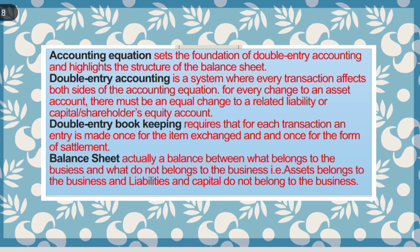The accounting equation sets the foundation of the double entry accounting system and highlights the structure of the balance sheet. Double entry accounting is a system where every transaction affects both sides of the accounting equation. For every change to an asset account, there must be an equal change to a related liability or capital account. Double entry bookkeeping requires that for each transaction, an entry is made once for the item exchanged and once for the form of settlement. This is also called accrual accounting.